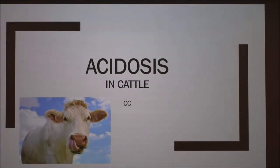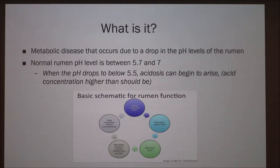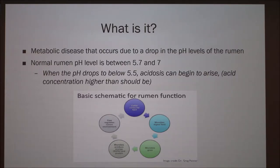Today I'm going to be talking about acidosis in cattle. Acidosis is a metabolic disease that occurs due to a drop in the pH levels of the rumen. The normal pH level in the rumen is between 5.7 and 7, and once the pH drops below 5.5, acidosis can begin to arise.